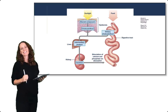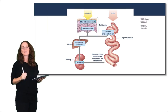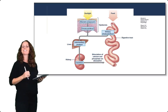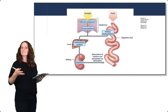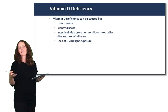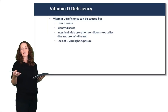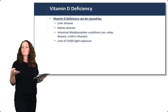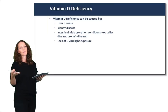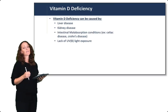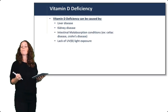Here's a summary of that pathway: it requires sunlight, skin, processing in the liver and kidneys, until we finally get active vitamin D which activates the digestive tract to absorb calcium and phosphate. It's important to understand this pathway because vitamin D deficiency can be caused by liver disease, kidney disease, inability to absorb vitamin D due to intestinal conditions such as celiac disease and Crohn's disease, or lack of UVB light exposure.